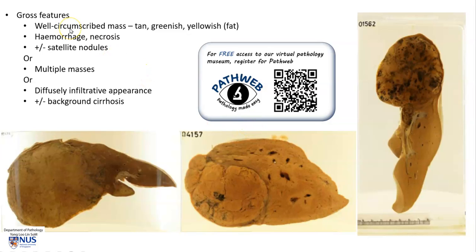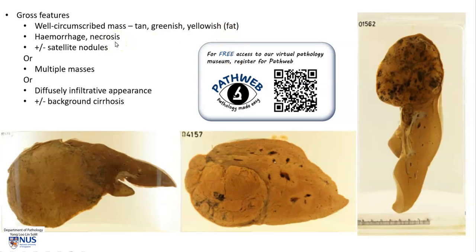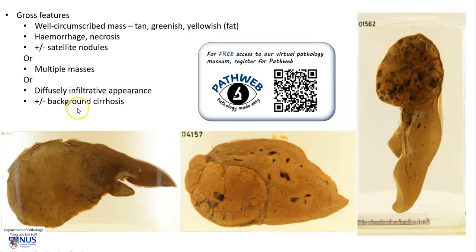Grossly, these tumors are relatively well-circumscribed, as we have seen in our examples, and the color can be quite variable — we have seen a tan tumor. Sometimes the tumors can be greenish because of bile production, and can also have a yellowish appearance due to accumulation of lipid within the tumor cells. There may also be areas of hemorrhage and necrosis, and sometimes satellite nodules adjacent to the main tumor mass. Patterns of gross appearance include a well-circumscribed single mass, multiple masses, or a more diffusely infiltrative appearance, and there may also be background cirrhosis.